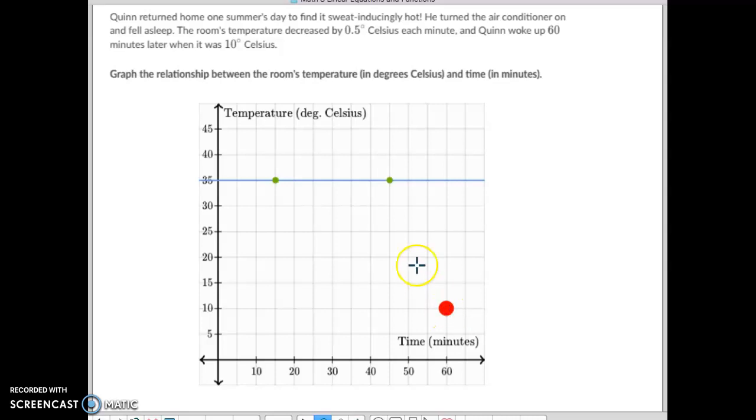Now, he knows the temperature had continuously been going down, so it's dropping to this point. And we have to figure out where it would be. Well, notice in the time, we're going up by 10-minute increments. If it goes down to half a degree in one minute, how much would it go down in 10 minutes?